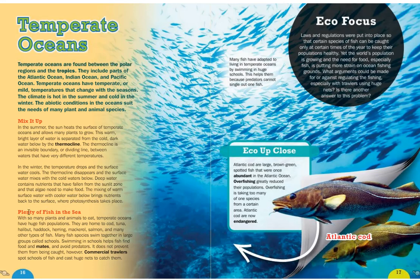With so many plants and animals to eat, temperate oceans have huge fish populations. They are home to cod, tuna, halibut, haddock, herring, mackerel, salmon, and many other types of fish. Many fish species swim together in large groups called schools, which helps them find food and mates and avoid predators. However, commercial trawlers — big fishing boats — spot schools of fish and cast huge nets to catch them.